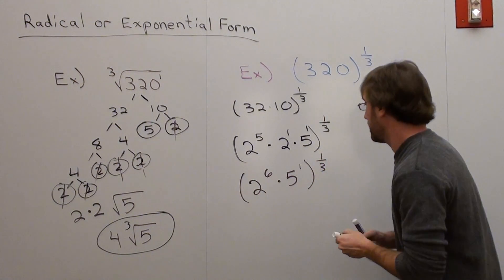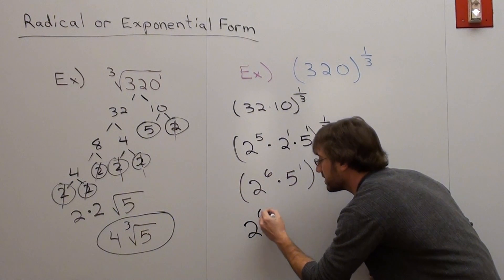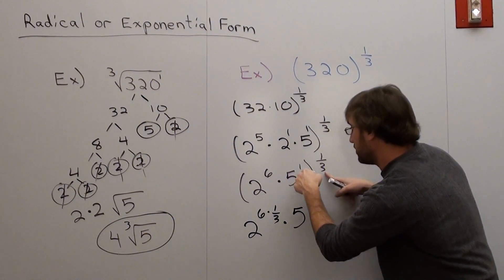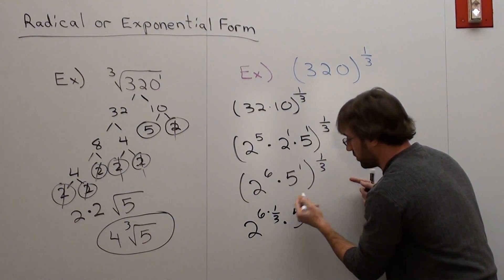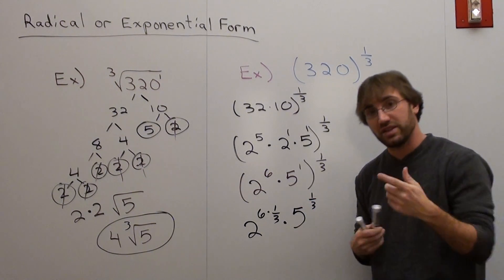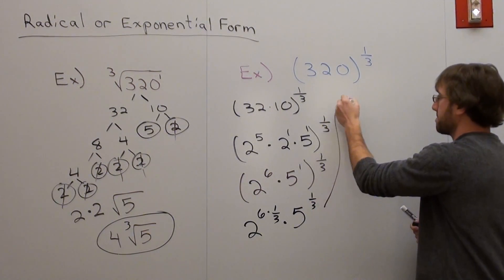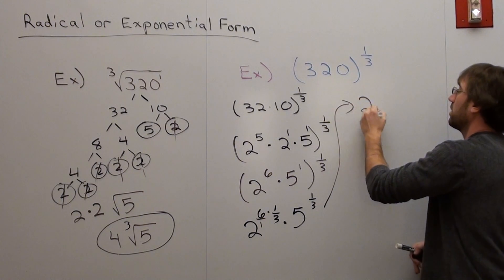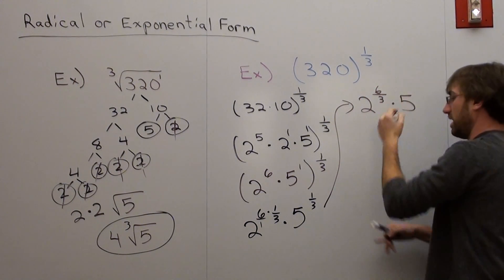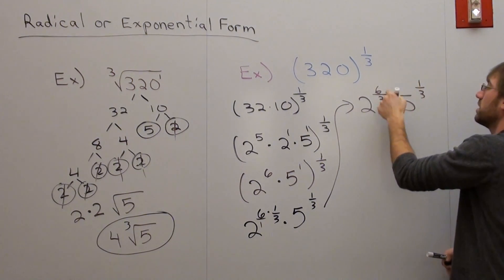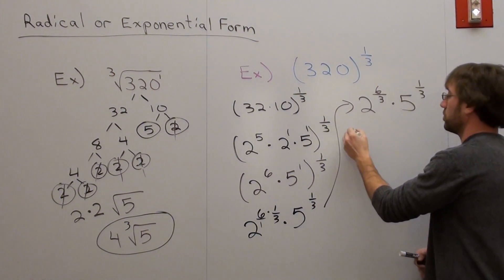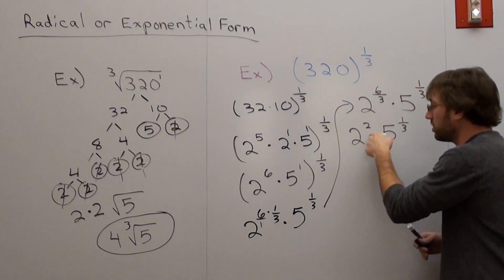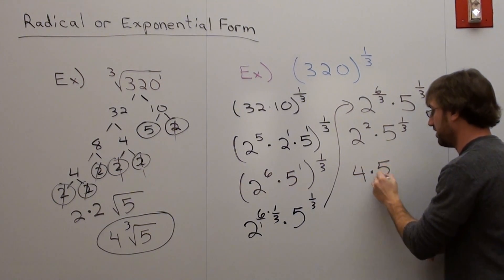Here's what's very interesting about it. This is 2 to the sixth times the third, right there, times 5 to the first times the third. 1 times the third is just one-third. Now if I rewrite that, that comes out to 2 to the sixth-thirds, because this is the same thing as 6 over 1, so it's 2 to the sixth over 3, times 5 to the one-third. 6 over 3 is the same thing as 2, so it's 2 to the second times 5 to the third power of 1 third, pardon me. 2 to the squared is 4 times 5 third.